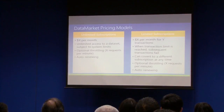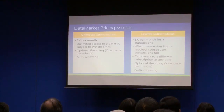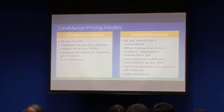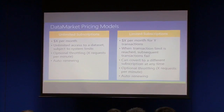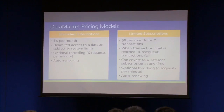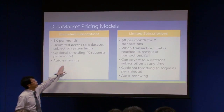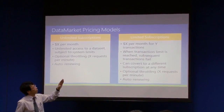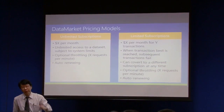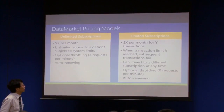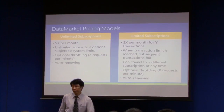The pricing model for the developer: there are basically two pricing models with Azure Data Market. The first is unlimited subscriptions — you pay a fixed amount and get unlimited access to the dataset, with optional throttling where the content provider can impose a limit on the speed, rate, or volume of data access. It is also self-renewing. The second is limited subscriptions — you pay for a certain number of transactions per month, and once you hit the limit, you can no longer get access. You can convert to a different subscription at any time, and throttling and self-renewing also apply.